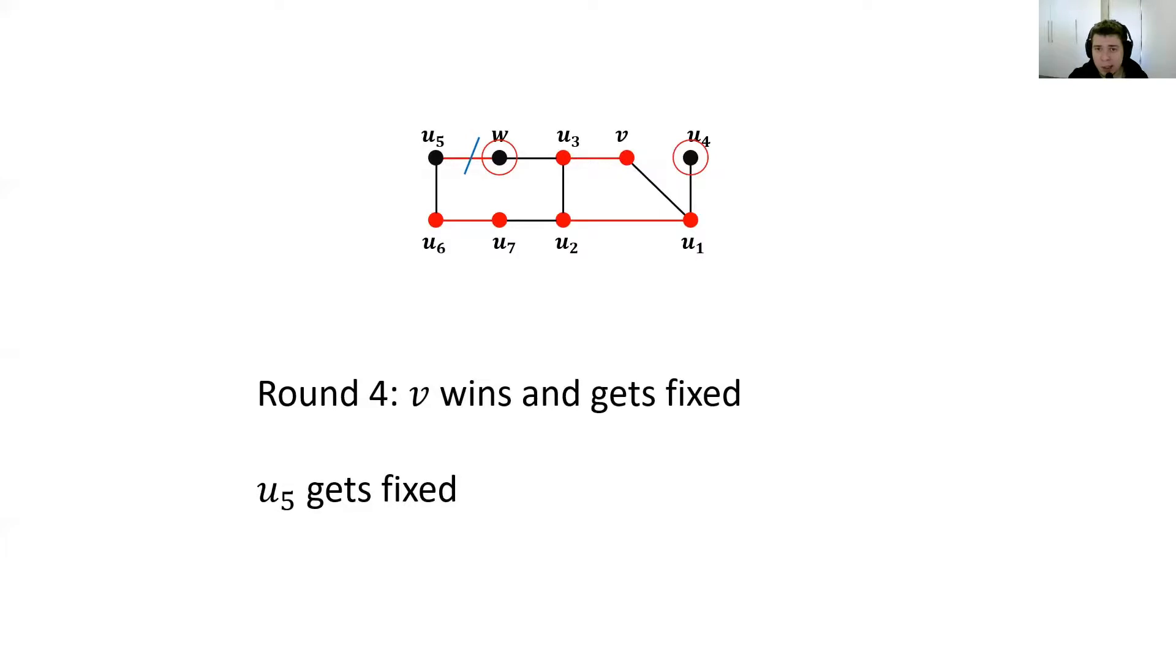Assume that V wins and in its three-hop neighborhood, it has the minimal timestamp. So only this node gets fixed. U4 and W remain dirty. Also, U5 gets fixed because it has the minimal timestamp in its three-hop neighborhood. Then in round five, there are no new topology changes. In rounds six to eight, again, timestamps are being propagated.